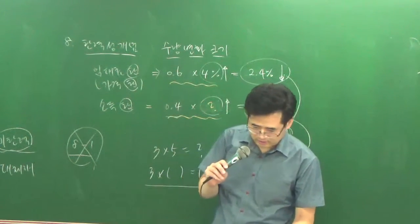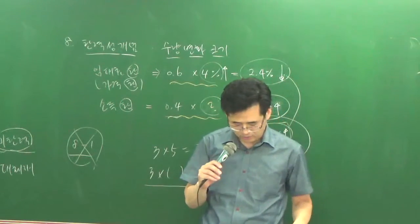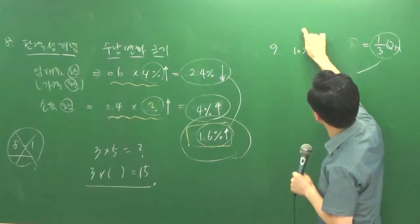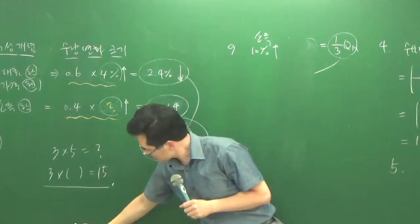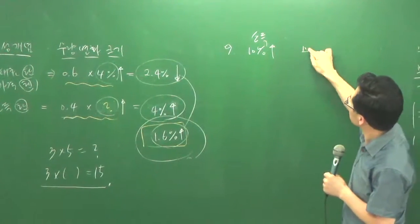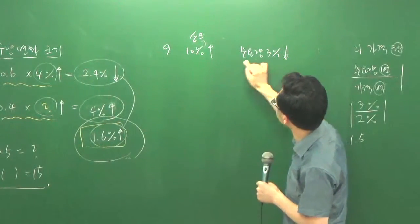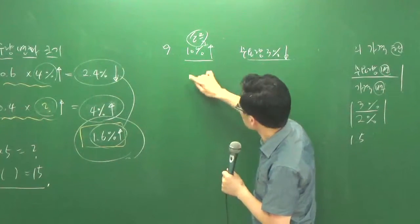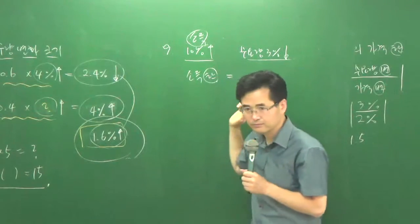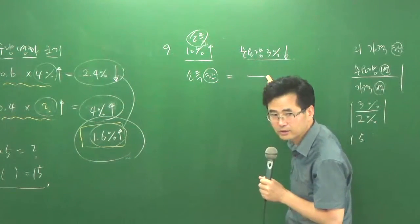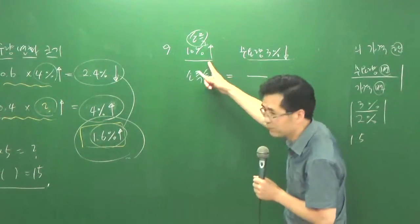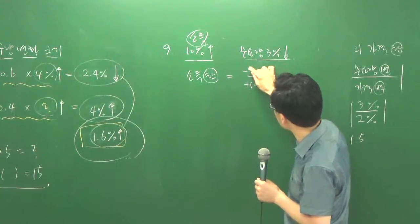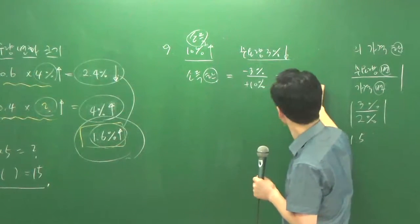다음에 9번 문제는 이거는 이제 이런 문제에 가깝다고 볼 수 있죠. 소득이 10% 증가니까 위로 올라가는 거죠. 소득이 10% 증가인데 수요량이 3% 감소죠? 방향이 어떻습니까? 반대죠? 수요량이 3% 감소, 그러면 이게 반대는 무슨 재화? 소득에서 방향이 반대니까 열등재란 말이에요. 관련재 가격 변화에서 반대면 보완재고요.